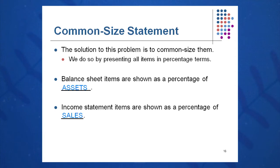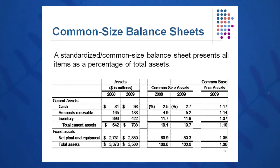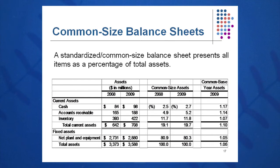So how do I common size a balance sheet? Essentially I divide everything by assets — take everything as a percentage of assets. On the income statement, I divide everything by a percentage of sales. It's a very simple thing to do to common size or standardize one of these financial statements. Here's a sample common size balance sheet where everything is done as percent of assets. I divide each line item by its corresponding total assets. If I want cash as a percent of assets, I just take 84 over 3,373 and get 2.5 percent, and so on down the balance sheet.